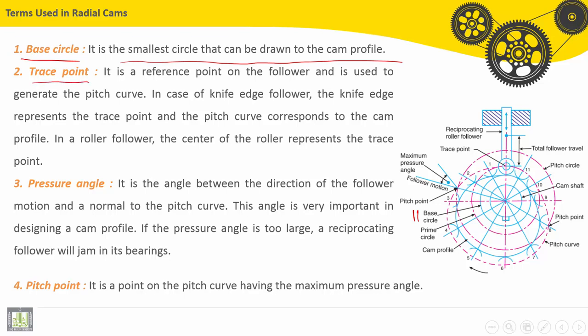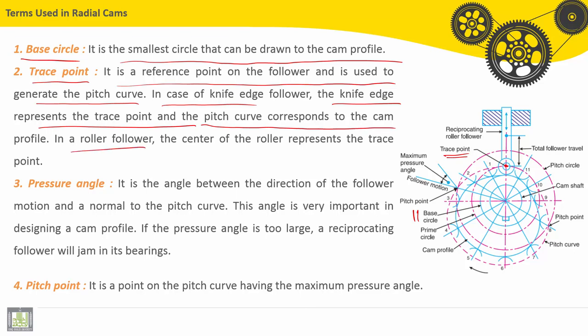Second, trace point. Here we have the trace point. It is a reference point on the follower and is used to generate the pitch curve. In case of a knife edge follower, the knife edge represents the trace point and the pitch curve corresponds to the cam profile. In a roller follower, the center of the roller, as shown here, this is the roller, the center of the roller represents the trace point.